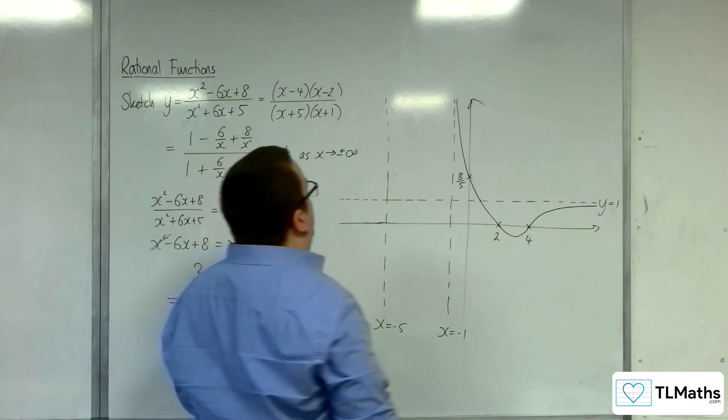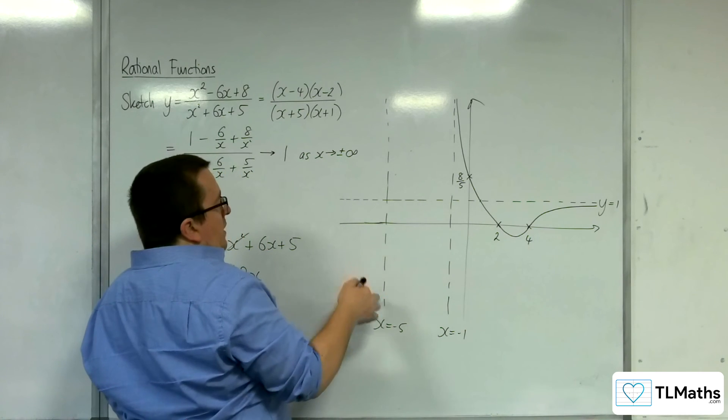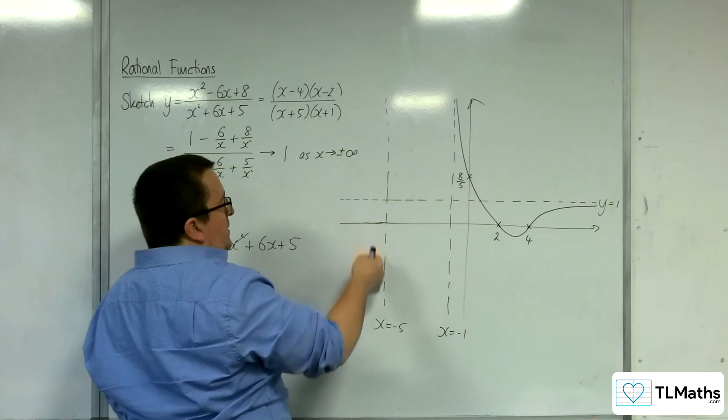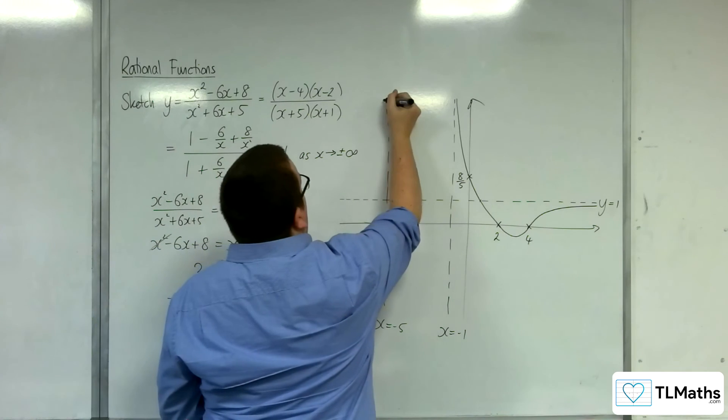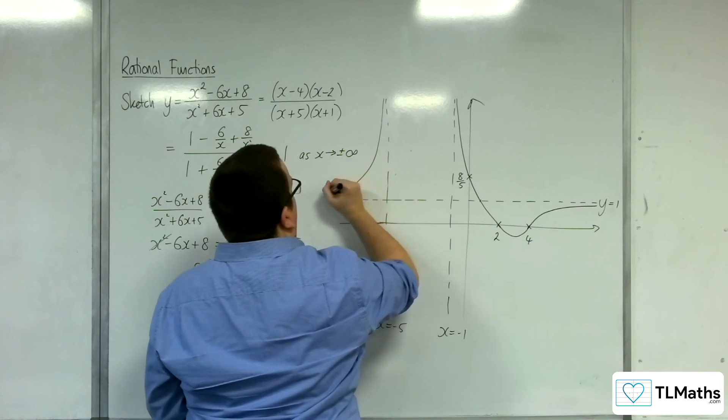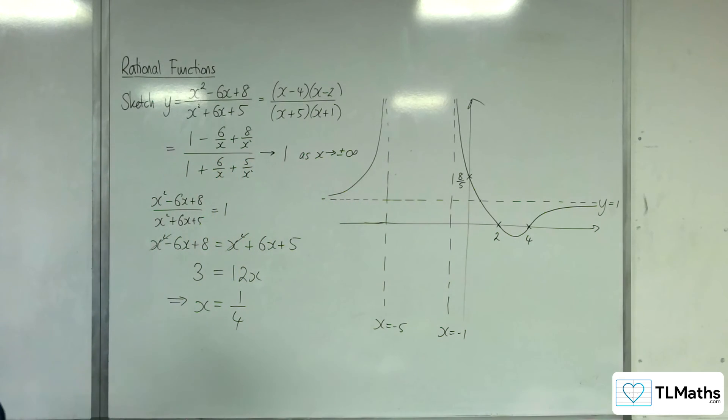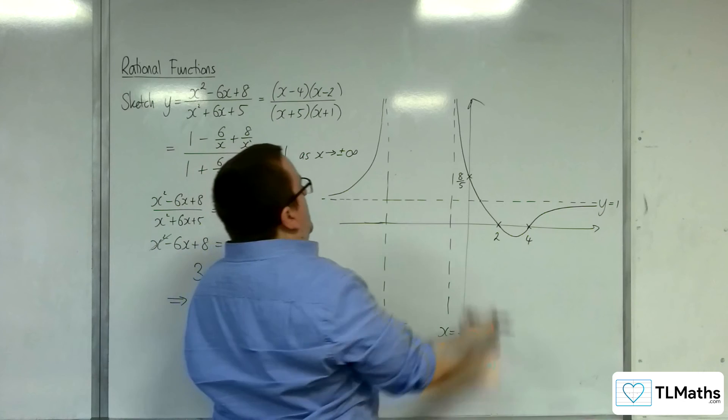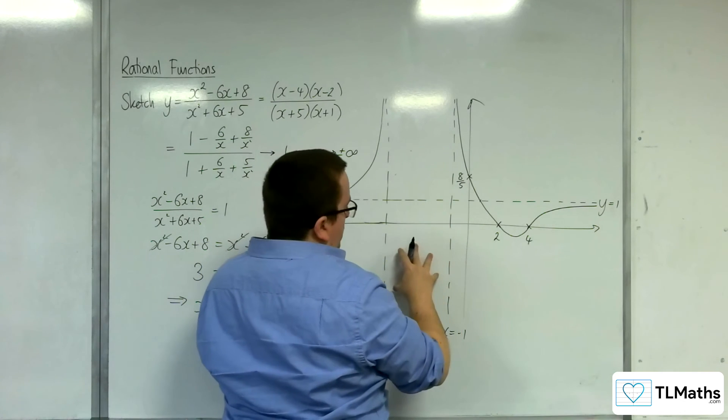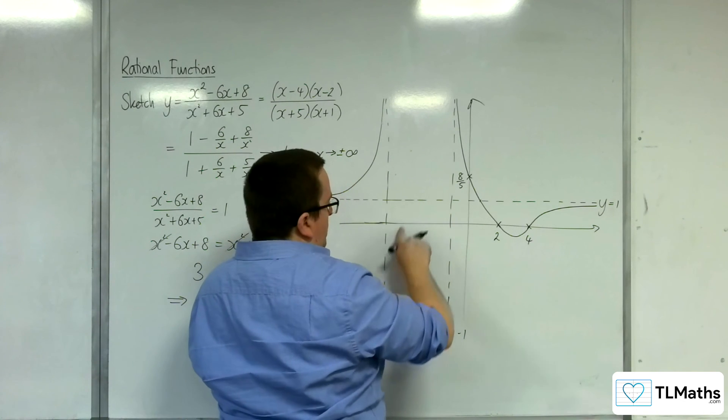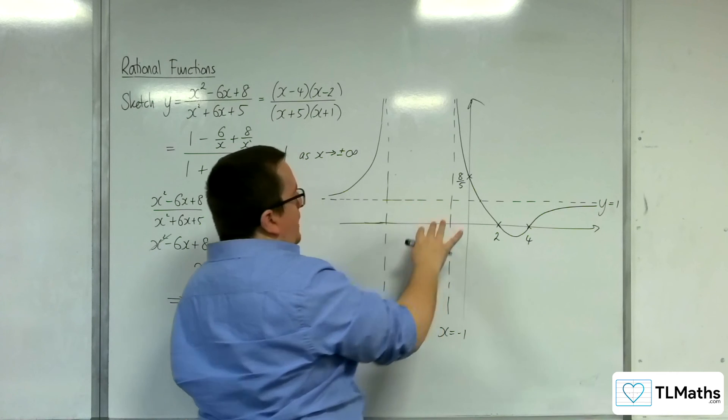Now how about for the other parts of the graph? Well, we can't have the graph down here because it would need to cross the x-axis again. So it's got to be in this part of the graph, tending towards both of those asymptotes. And now it's either in this portion of the graph or this portion. We know it can't cross into this rectangle.